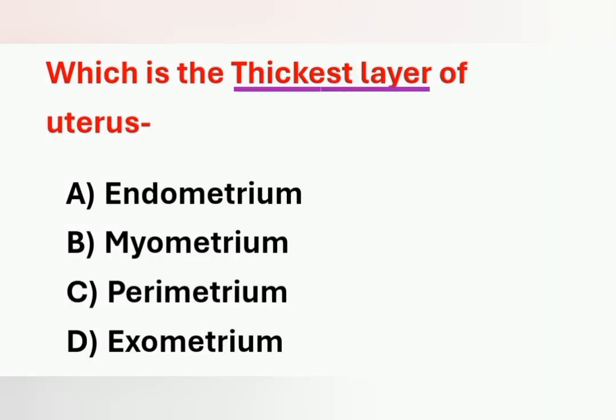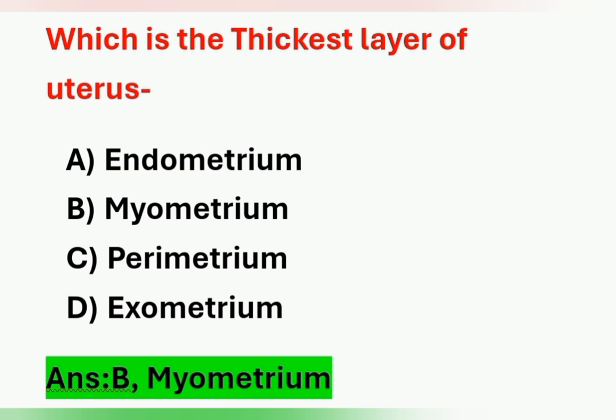Next question: which is the thickest layer of the uterus? Options: Option A – endometrium. Option B – myometrium. Option C – perimetrium. Option D – exometrium. The thickest layer of the uterus is the myometrium. Option B is the correct answer.